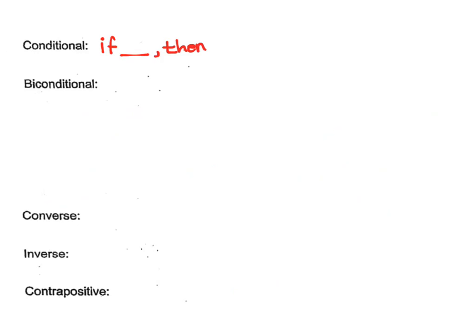How about the next one? Conditional statement — we many times use the words IF and THEN. If something, then something else. The symbolic form would be: if I have P, then Q, with an arrow. That's the symbolic form of the conditional statement. When is a conditional statement true? True implies true — that's true.